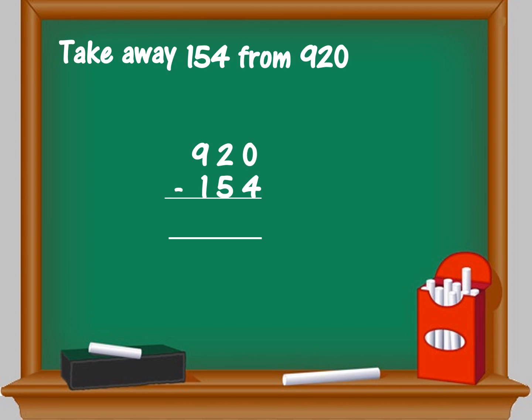You can't subtract 0 minus 4, so you borrow from the tens place. 2 becomes 1, and in the units place you have 10 minus 4 which equals 6. In the tens place you have 1 minus 5, which is again not possible, so you borrow from the hundreds place.